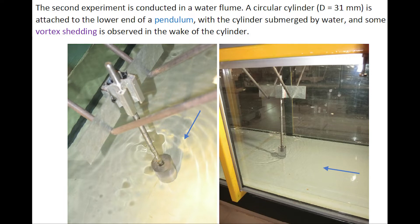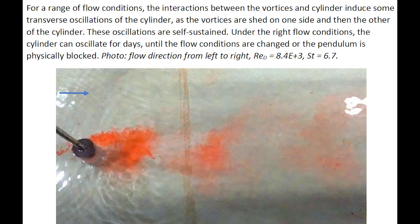A second experiment is conducted in a water flume. A circular cylinder is attached at the lower end of a pendulum with the cylinder submerged in water, and some vortex shedding is observed in the wake. For a range of flow conditions, the interactions between the vortices and cylinder induce a transverse oscillation of the cylinder as the vortices are shed on one side and then the other.